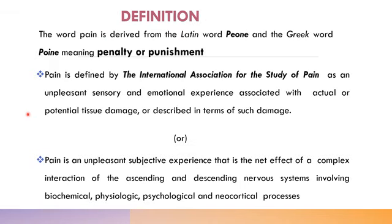The word 'pain' is derived from the Latin word 'poena' and Greek word 'poine', meaning penalty or punishment. It is defined by the International Association for the Study of Pain as an unpleasant sensory and emotional experience associated with actual or potential tissue damage, or described in terms of such damage. There is an international association dedicated solely to the study of pain — that shows how important it is. 'Actual' means there is actual tissue damage, and 'potential' means the damage may take place. Both sensory and emotional components are present.